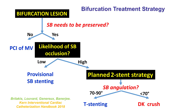How should we treat this bifurcation lesion? The first question to ask is whether the side branch — the diagonal in our case — needs to be preserved. If it's a small branch whose occlusion would not have significant consequences, we don't need to worry about it. The second question is: what is the likelihood of occluding the side branch when stenting the main vessel? If that's considered to be low, then provisional is the way to go; if considered high, then a planned two-stent strategy may be preferred.